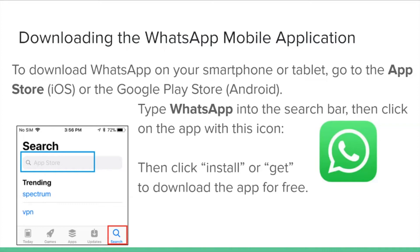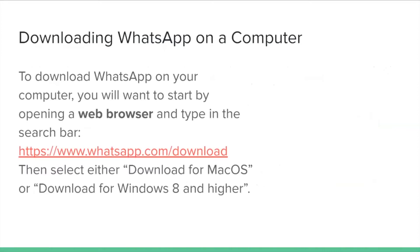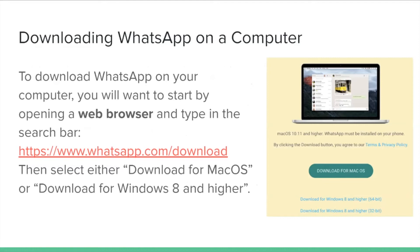To download WhatsApp on your computer, start by opening a web browser and typing in the provided link. Then select either 'Download for Mac OS' or 'Download for Windows 8 and higher.'